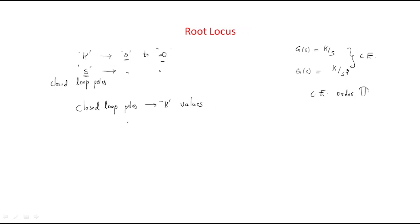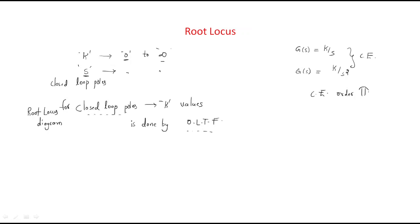In order to avoid this difficulty, we follow a shortcut procedure. We draw the root locus diagram for closed-loop poles using the open-loop transfer function. By using the open-loop transfer function, we find out the root locus for the closed-loop poles.